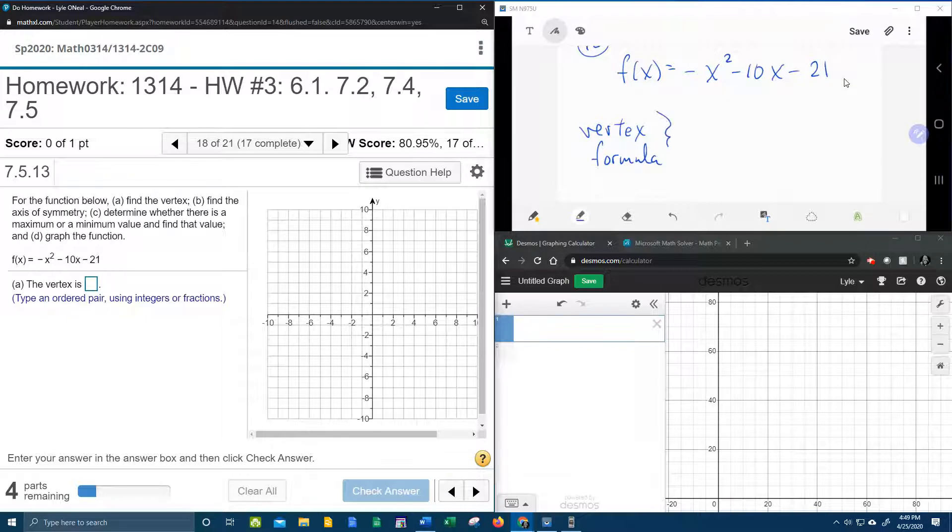So the vertex formula is minus b over 2a, f of minus b over 2a. So the vertex of a quadratic is the vertex on the parabola, which is an ordered pair at the center of the parabola. So I don't know if you noticed this or not, but this is an ordered pair. This is the x coordinate. This is the y coordinate.